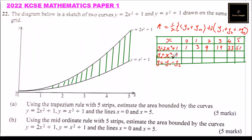For y2 equals x squared plus 1: when x is 0, y2 is 1; x is 1 gives 2; x is 2 gives 5; x is 3 gives 10; x is 4 gives 17; x is 5 gives 26. Subtracting y1 minus y2 gives: 0, 1, 4, 9, 16, and 25.